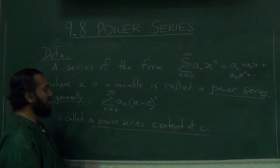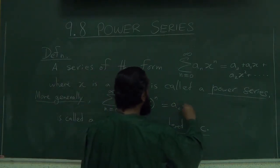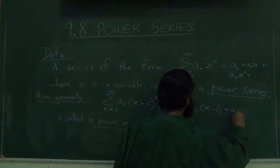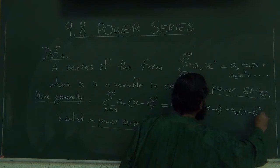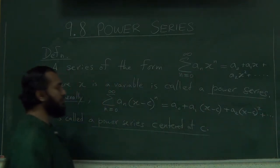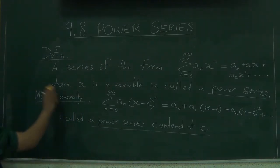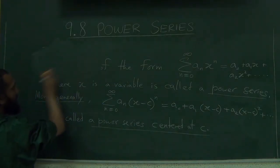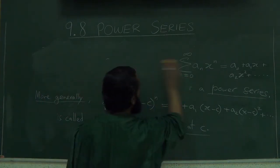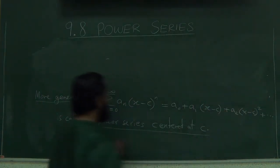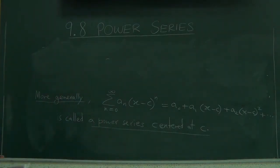Generally speaking, this will look like a0 plus a1 times x minus c plus a2 times x minus c squared and so on. Let's do just a few examples of this thing to understand how these look like.